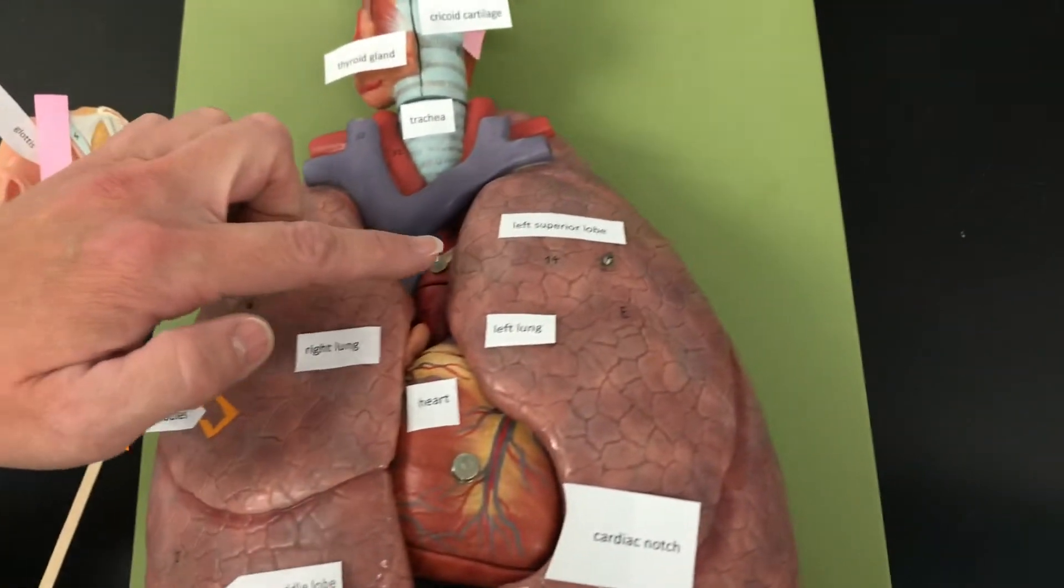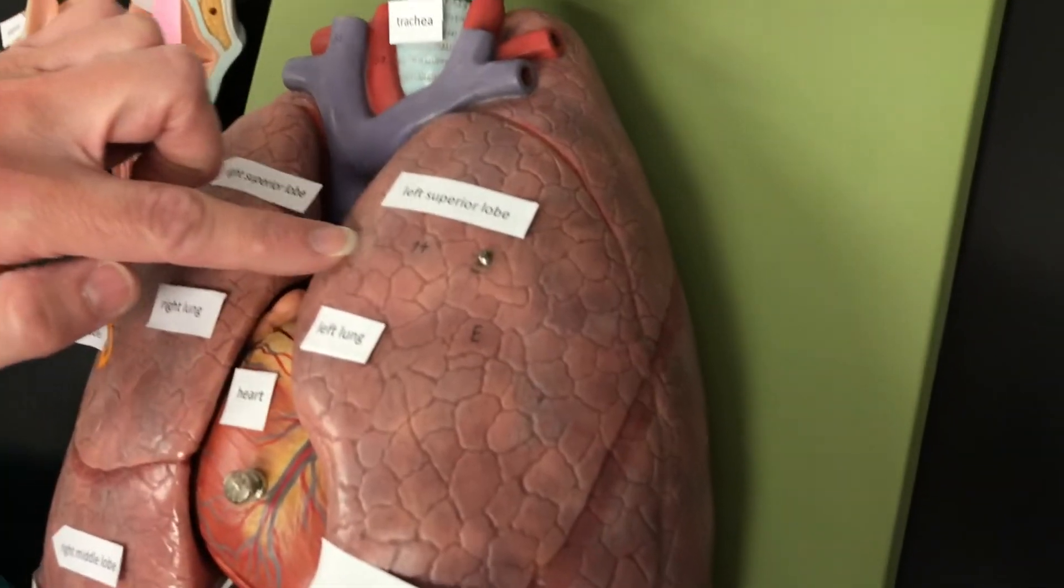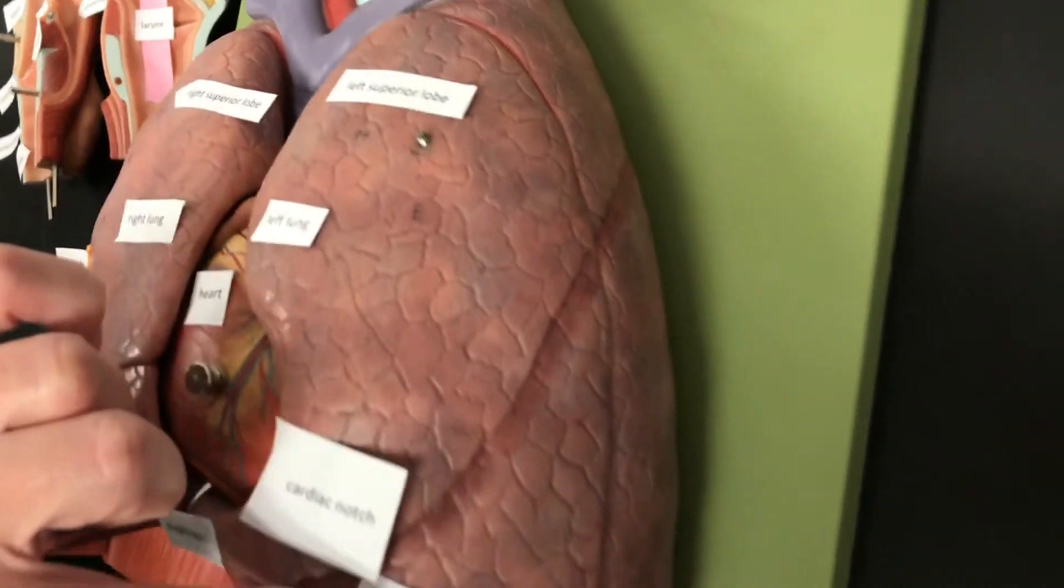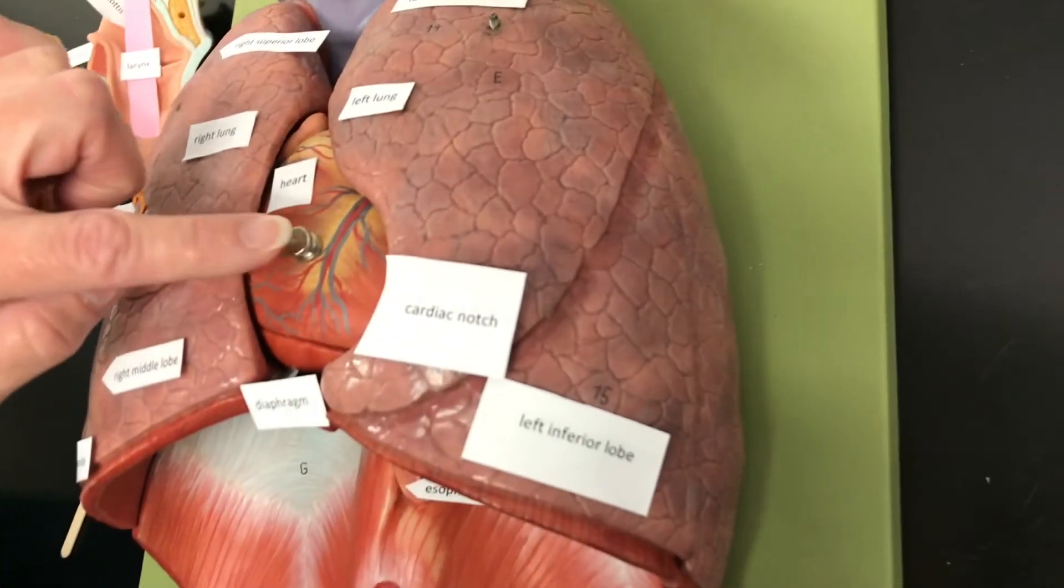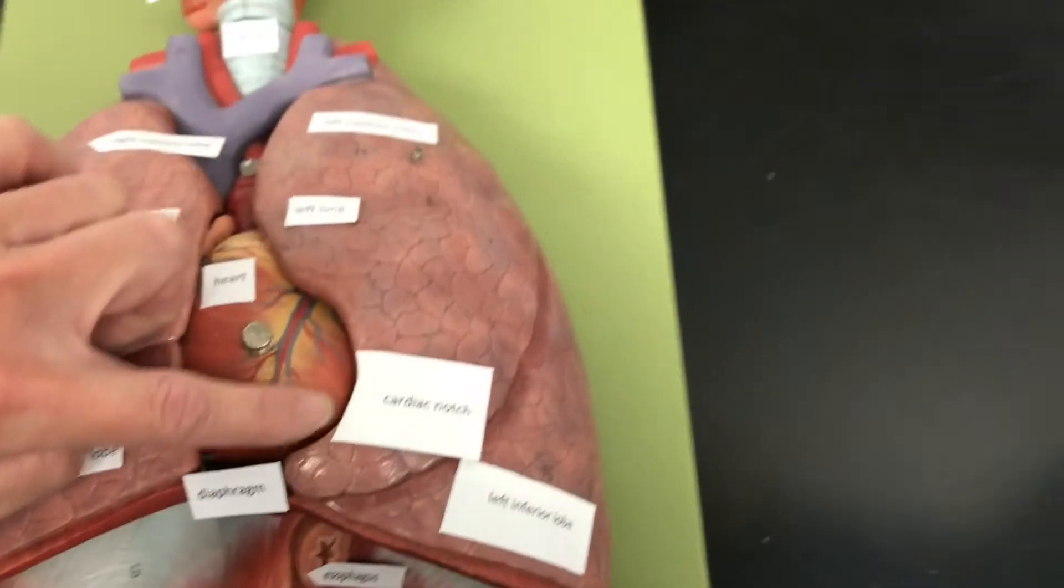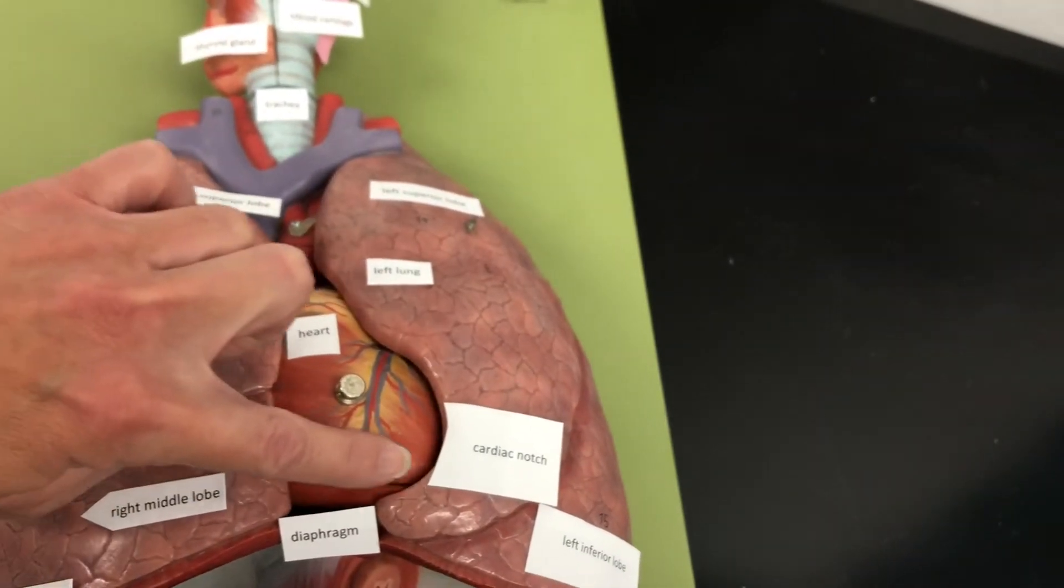The left lung only has two lobes. It has the left superior lobe and the left inferior lobe. The left lung is smaller. It has the cardiac notch that's going to allow for the apex of the heart.